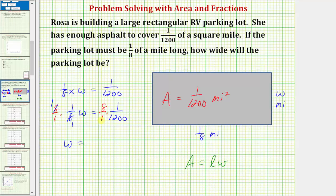On the right side, we just have 8/1 times one over 1,200. And again, we can simplify before multiplying. Let's see if eight is a factor of 1,200.